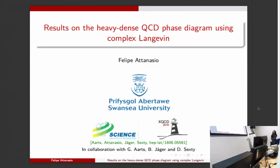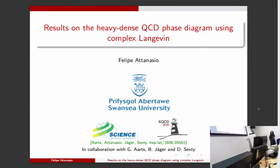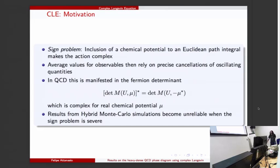Some motivation: we do complex Langevin because the same problem appears on QCD. The same problem appears on the fermion determinant because you have a real chemical potential - that fermion determinant is complex and you cannot do importance sampling anymore, so you have to resort to other techniques.